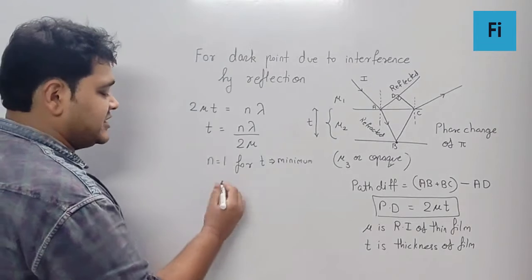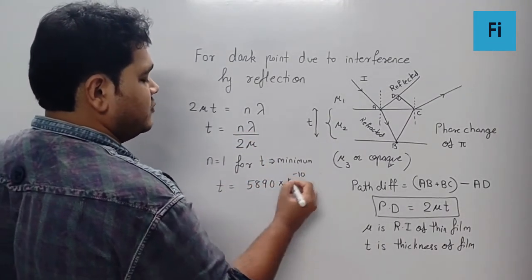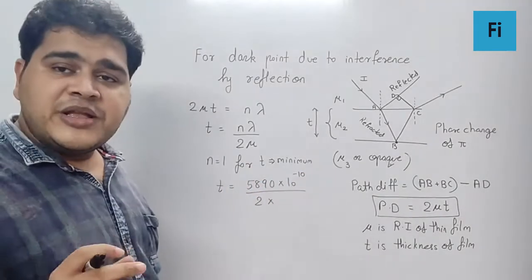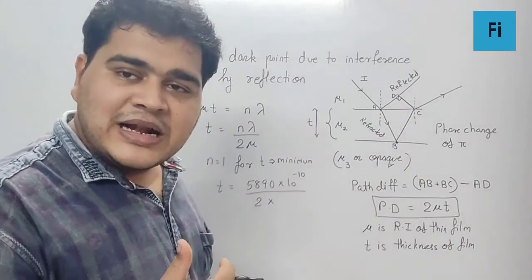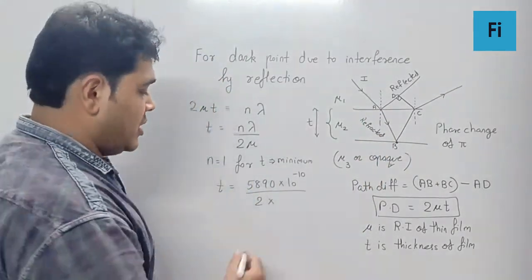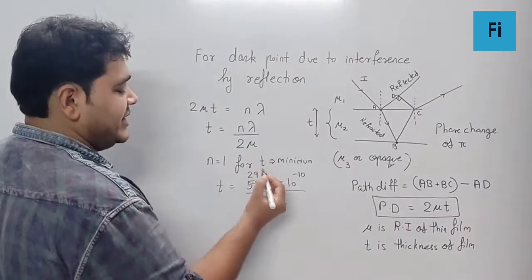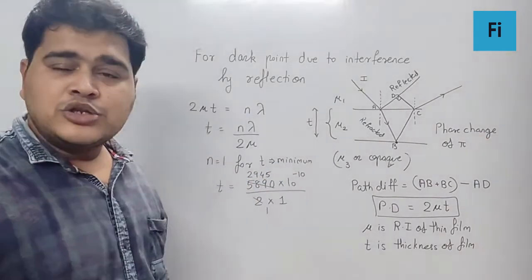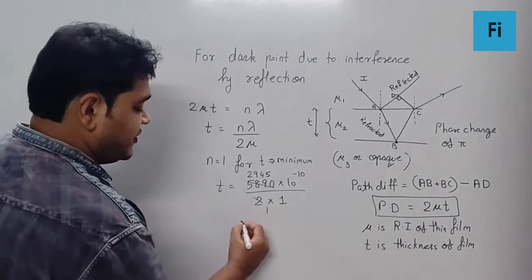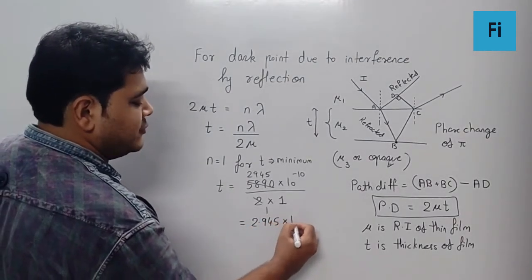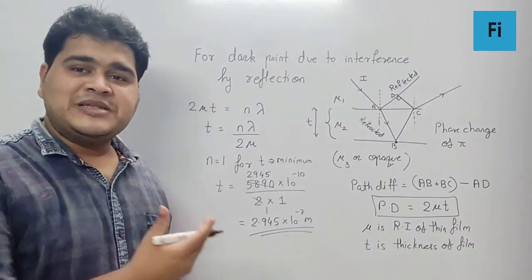That means if I substitute λ which is given as 5890 angstrom, that is 10^-10, upon 2 into—they have mentioned the film as an air film which means the medium present here is air and that is nothing but refractive index equal to 1. When you cancel this, 2×2 is 4, 2×9 is 18, 2×4 is 8, 2×5 is 10, so 2945×10^-10 meter, which out of the given options fits as 2.945×10^-7 meter, and that is your final answer. Please copy the solution.